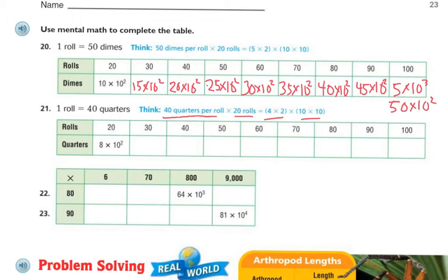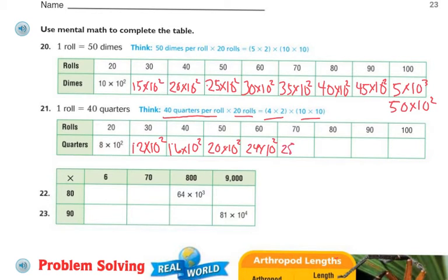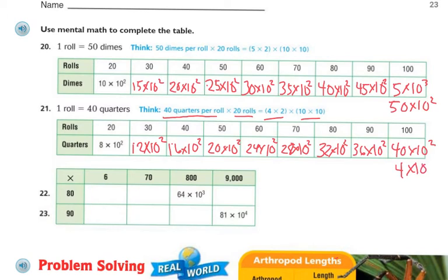So 20 is 8 times the second power of 10. 30 is 12 times the second power of 10. 40 is 16 times the second power of 10. 50 is 20 times the second power of 10. 60 is 24 times the second power of 10. 70 is 28 times the second power of 10. 80 is 32 times the second power of 10. 90 is 36 times the second power of 10. And 100 is 40 times the second power of 10, or also 4 times the third power of 10.